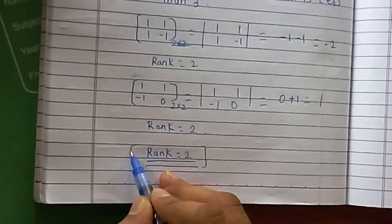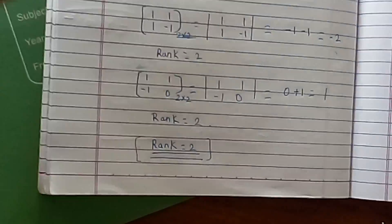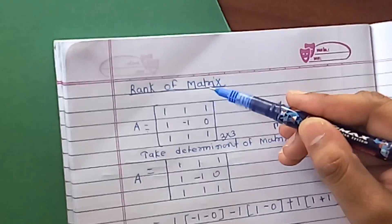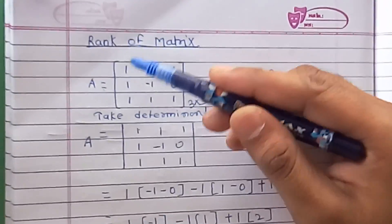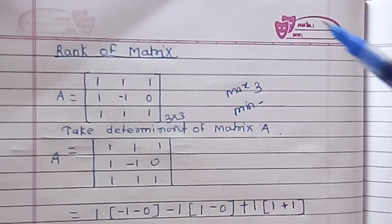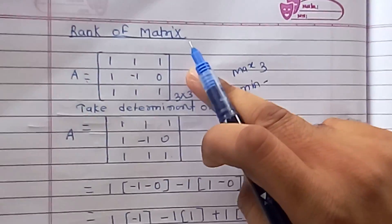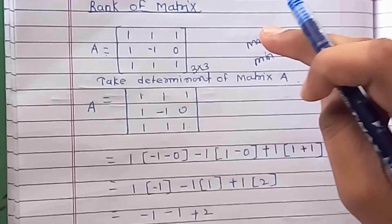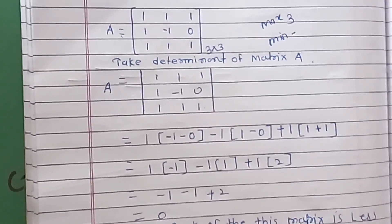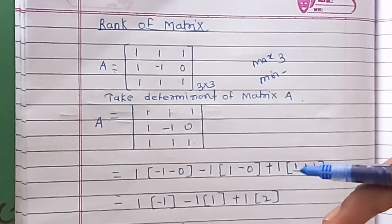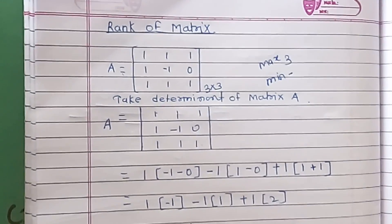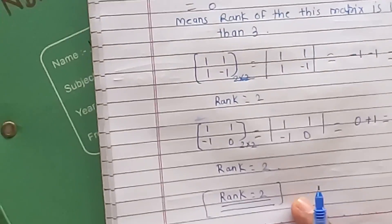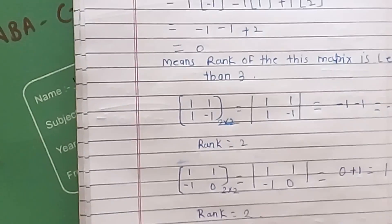This type of question is asked in exams. If a non-square matrix is given, such as a four by three matrix, we first convert it to a square matrix — considering the three by three submatrix — and then apply this method to find the rank. That's all.